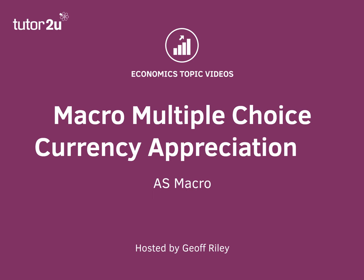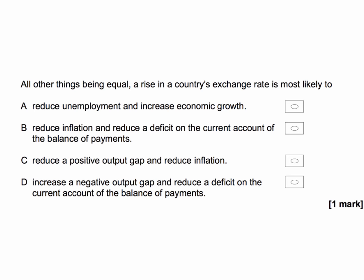Hi there, let's take a look at a macro multiple choice question, which in this case is looking at the economic effect of an appreciation of a currency. Here's the question: all other things being equal — in other words, ceteris paribus — a rise in a country's exchange rate is most likely to cause what?